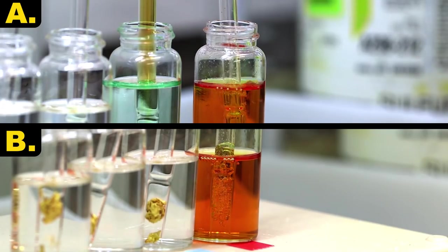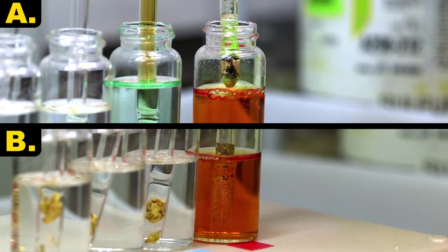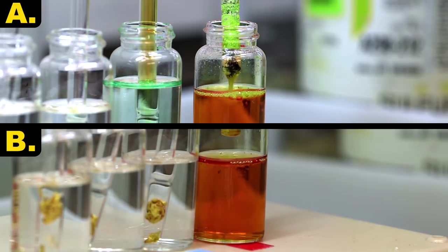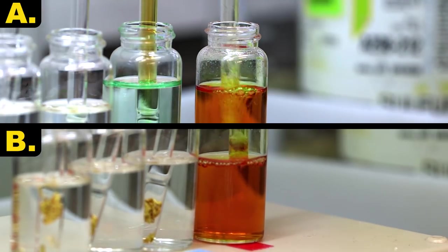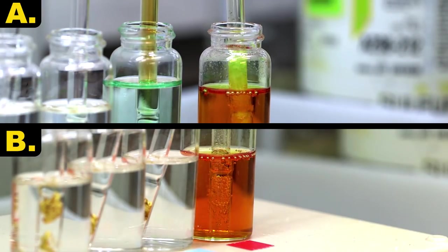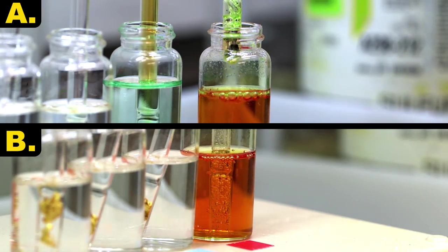Unlike the aluminum, the copper, or metal A, this metal B doesn't do anything except in the aqua regia. That means metal B is gold. Let that sink in for a minute. We've just dissolved real gold. Okay, so we did it at the top of the episode, but let us have this.